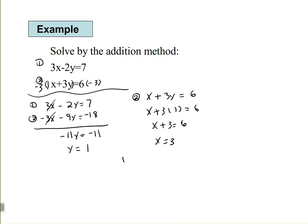So, my solution is 3, 1, the ordered pair 3, 1.